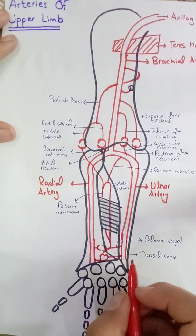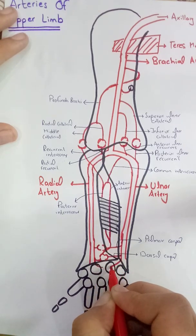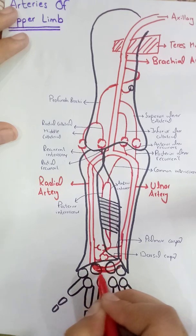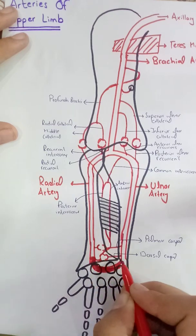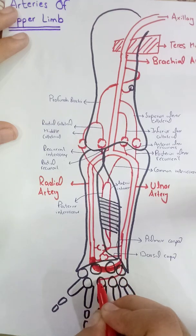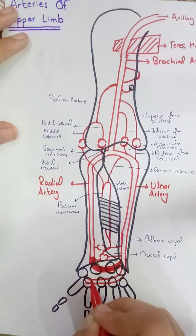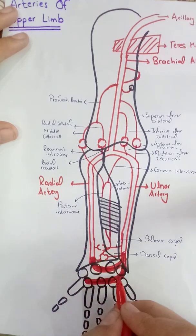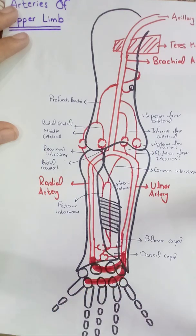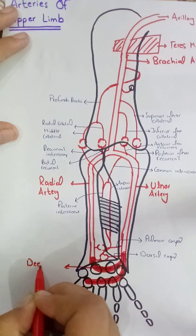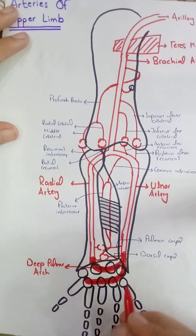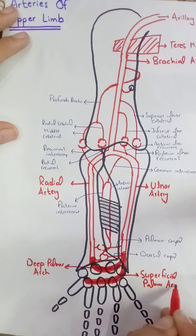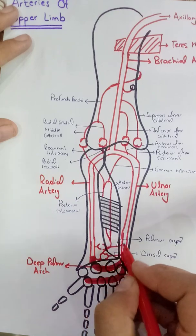The ulnar artery and the radial artery anastomose to give the deep palmar arch. The ulnar artery itself then forms the superficial palmar arch. So there are two arches: the deep palmar arch, which is mainly formed by the radial artery, and the superficial palmar arch, which is formed mainly by the ulnar artery.